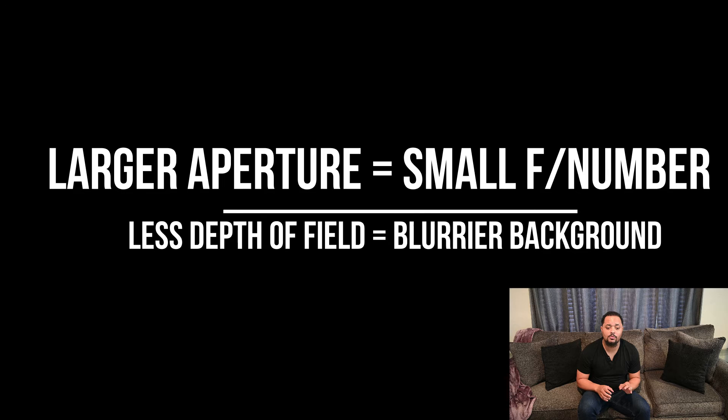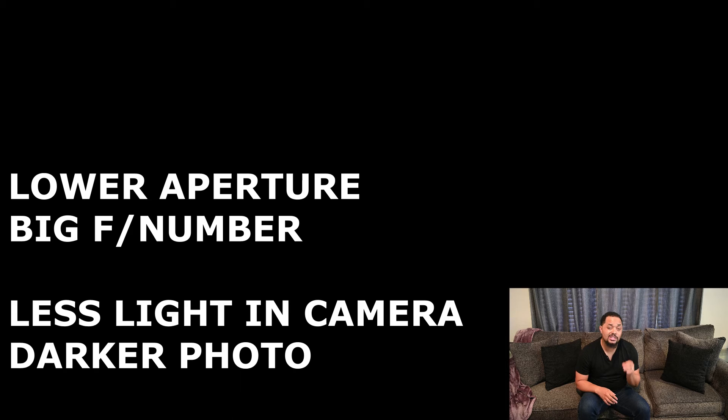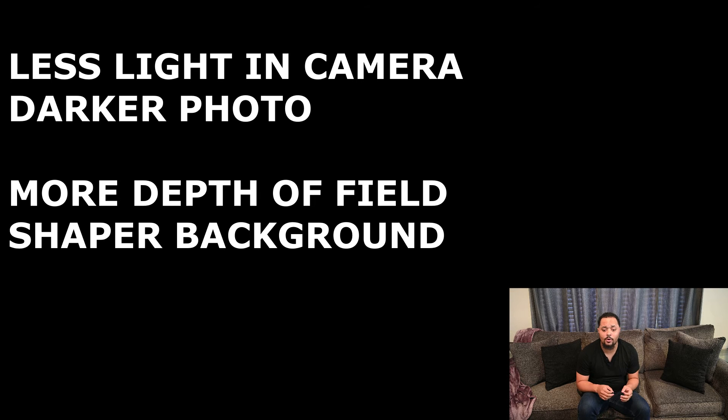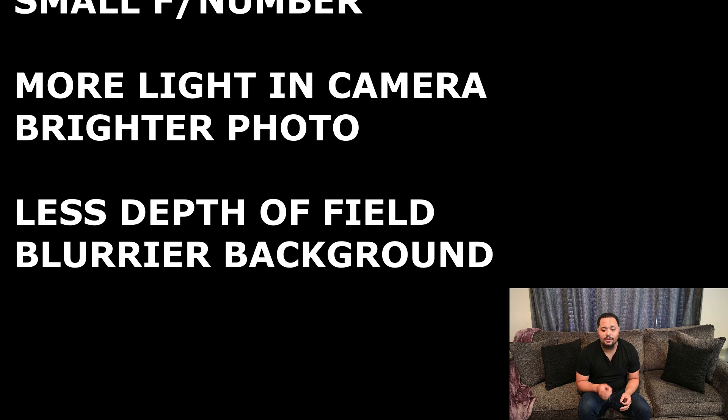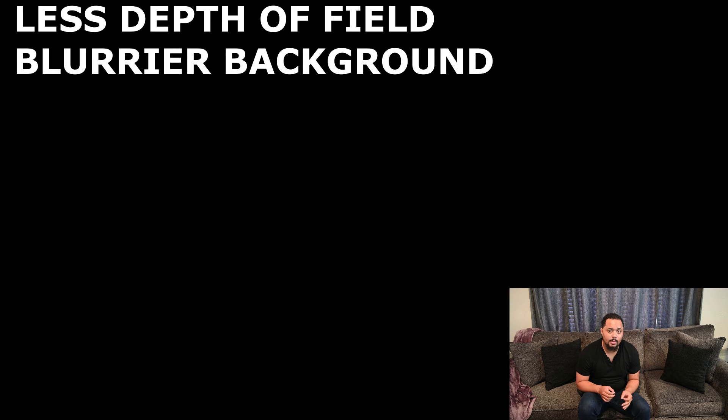So those are the three parts to remember. To reiterate: a lower aperture is a big f-stop number, which equals less light in the camera, a darker photo, and a sharper background. A large aperture is a small f-number, which equals more light in the camera, a brighter photo, and a blurry background. There are two other parts that help with the exposure triangle — ISO and shutter speed — but you need to understand what aperture can do so you know when and when not to adjust certain things. That is aperture.